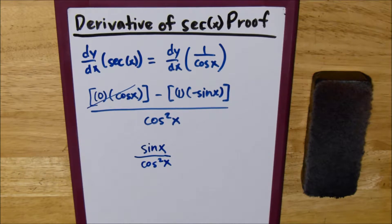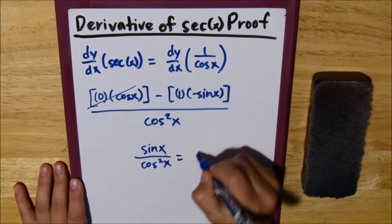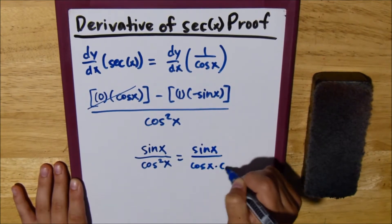Now, we can separate the denominator into sine of x over cosine x times cosine x.